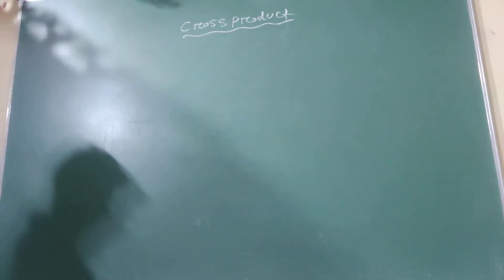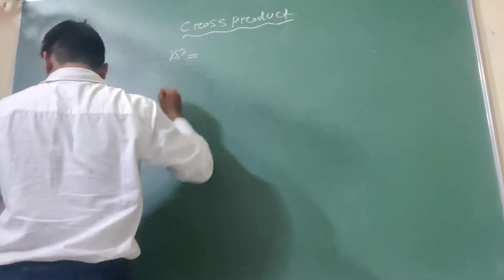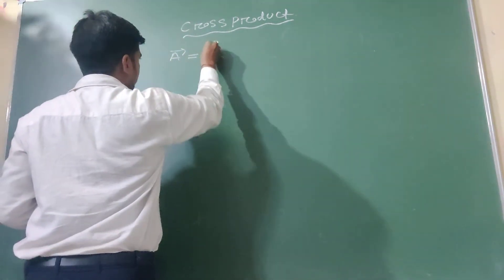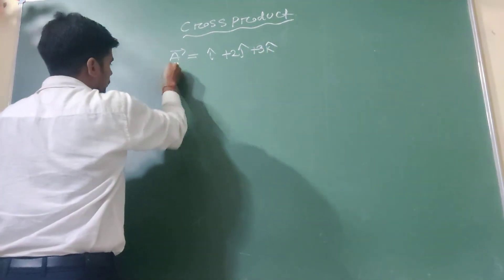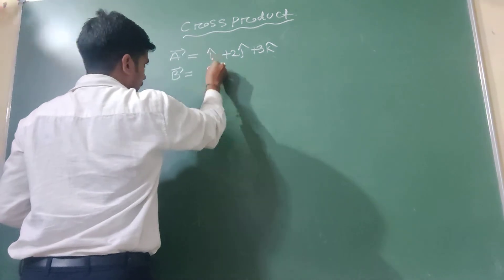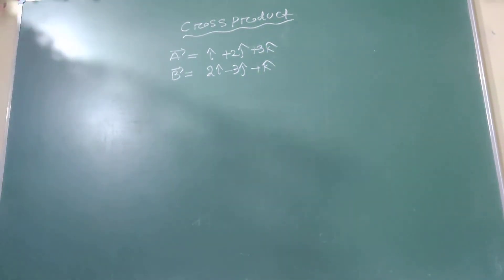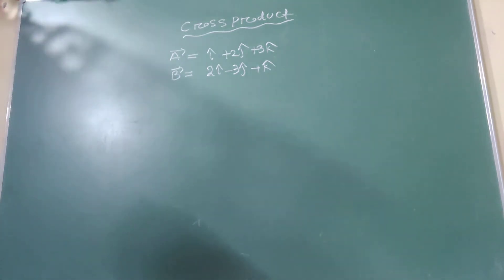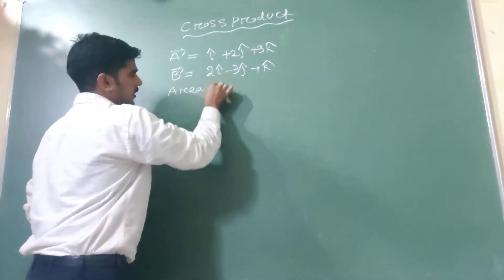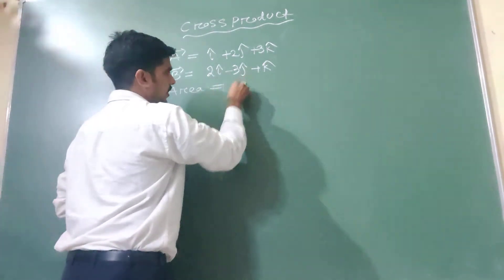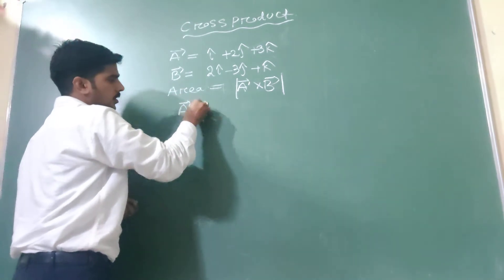Write another question: Calculate the area of the parallelogram if A vector equals I cap plus 2 J cap plus 3 K cap, and B vector equals 2 I cap minus 3 J cap plus 3 K cap. Find the area of the parallelogram when adjacent sides are given. The formula for area of parallelogram is the magnitude of A vector cross B vector.